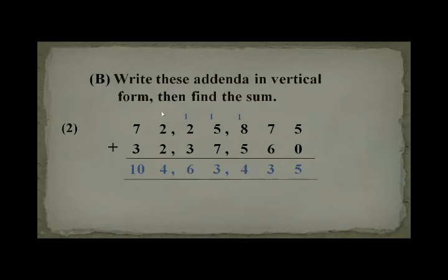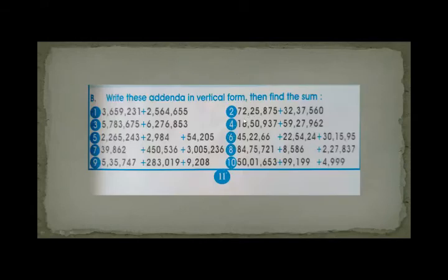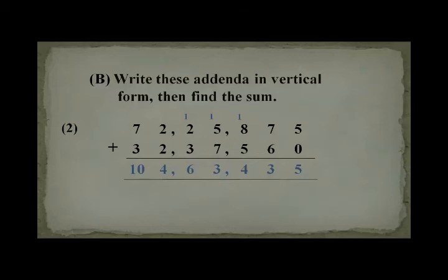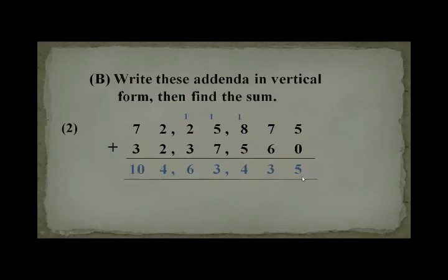Write these addenda in vertical form, then find the sum. Number 2: 72 lacs, 25,875, plus 32 lacs, 37,560. This is written in Pakistani period. Starting from the right: 5 plus 0 equals 5; 7 plus 6 equals 13, write 3 and carry 1; 8 plus 5 equals 13, plus 1 equals 14, write 4 and carry 1; 7 plus 5 equals 13, write 3 and carry 1; 3 plus 2 equals 5, plus 1 equals 6; 2 plus 2 equals 4; and 7 plus 3 equals 10. These are addenda and this is the sum.